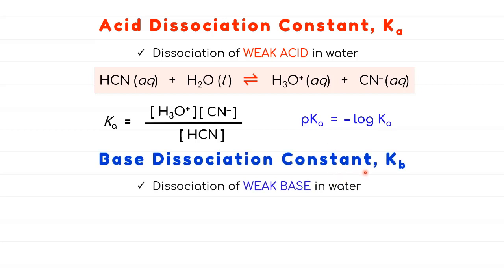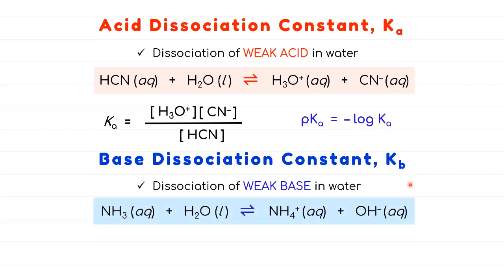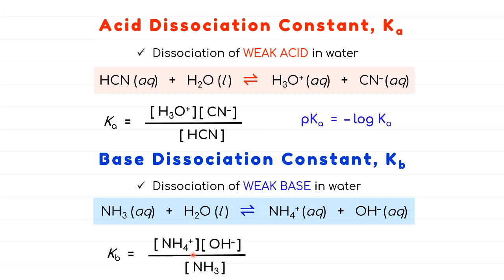The same applies to the base dissociation constant, but this time we have a base, that's why the name is Kb. The equilibrium involving weak base NH3 dissociates in water to form NH4+ and OH−. The Kb can be expressed as concentrations of NH4+ times concentrations of OH− divided by concentration of NH3. Make sure when you dissociate your base to have OH−. NH3 is not capable of forming OH− on its own, that's why we need water. We can also convert Kb to pKb by applying negative log base 10 to Kb.